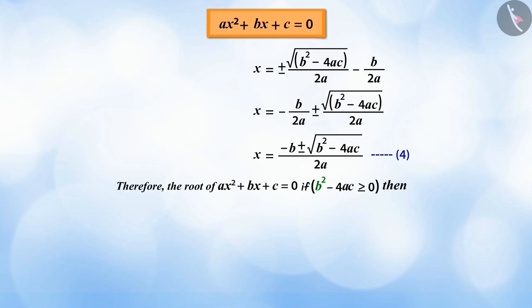If b to the power of 2 minus 4ac is greater than or equal to 0, then this gives two real roots of the quadratic equation ax to the power of 2 plus bx plus c equals 0.